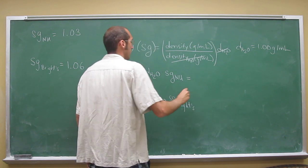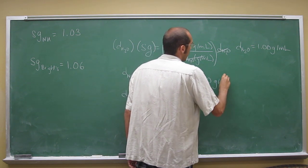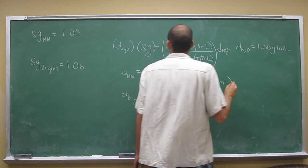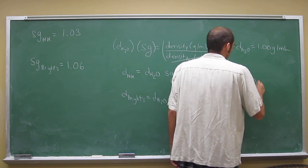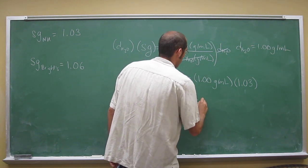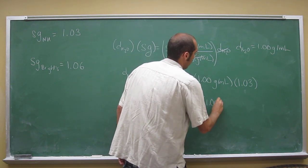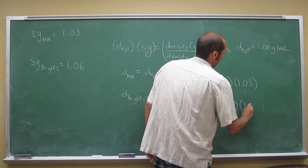When we do that, we get 1.00 grams per mil times 1.03 for normal urine. And for Bright's, it's again 1.00 grams per mil times 1.06.